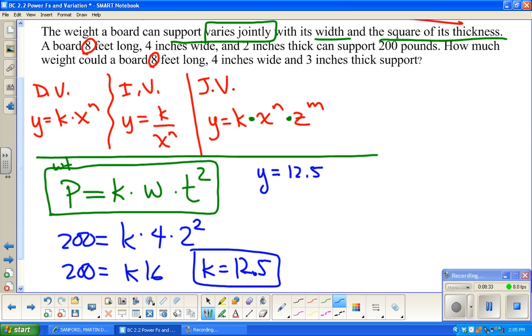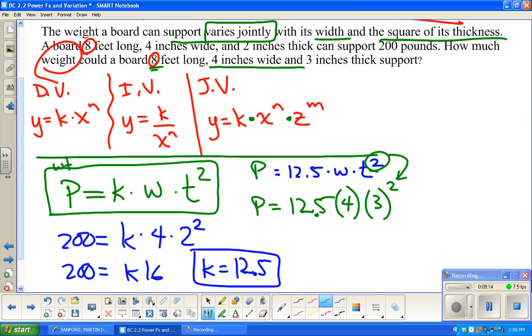Now we're going to use this k. So, P equals 12.5 times w times t squared. Now it says, how much weight could a board that's eight feet long, four inches wide, and three inches thick support? We're going to find P. P equals 12.5 times 4 times 3 squared. Just worth noting that since the t is squared, the t has to be squared all along the way. So, 450.